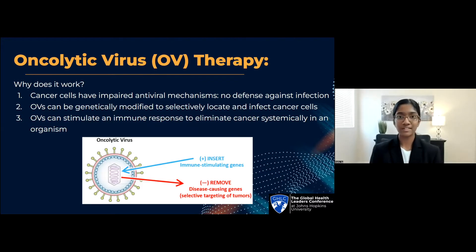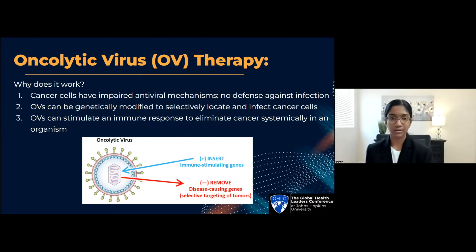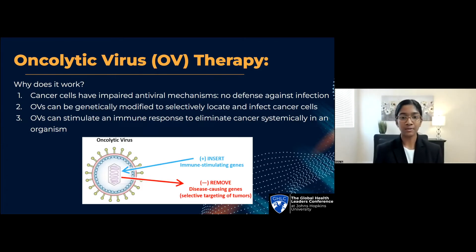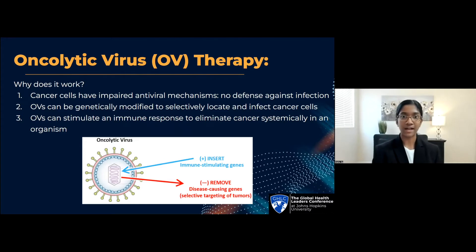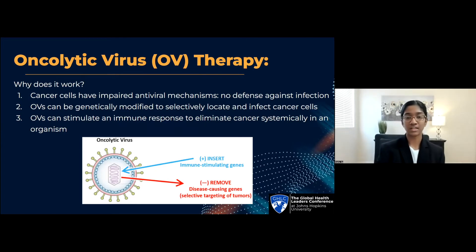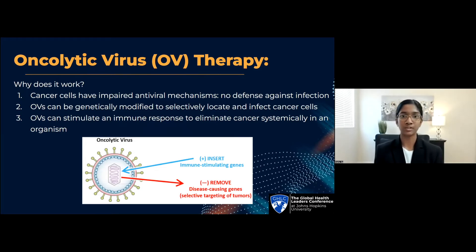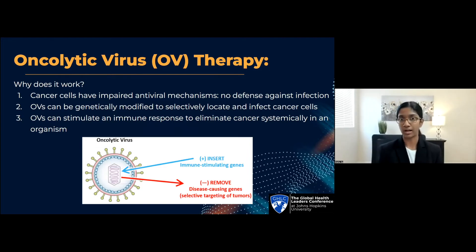Second, natural viruses can be engineered to give them advantageous properties, including decreasing their ability to infect normal cells. The goal with oncolytic viruses is to have them focus in on only infecting tumor beds, and then work to instigate a larger immune response that eliminates cancer systemically. Third, after oncolytic viruses bind and infect cancer cells, they can cause these cells to burst, killing them and releasing cancer cell antigens. These antigens can then stimulate immune responses that seek out and eliminate cancer cells nearby or potentially anywhere else in the body.